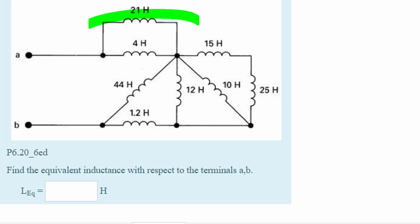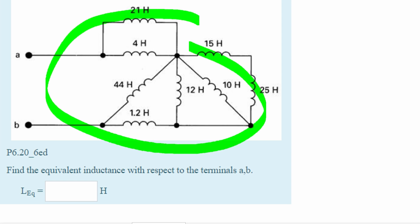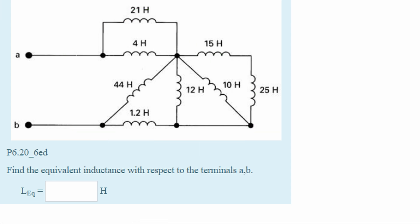In this problem we are given a circuit diagram with only inductors, and we want to find the equivalent inductance with respect to the terminals A and B. If inductors are in parallel we use the parallel formula, which works exactly the same as resistors in parallel. If inductors are in series, we just add them together.